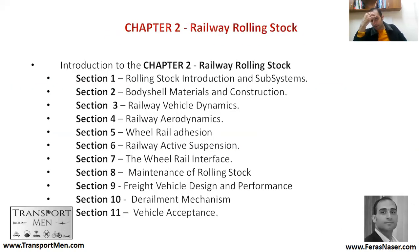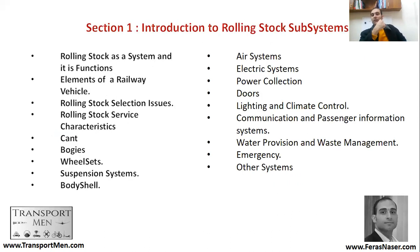Let us start with this chapter, Section 1: rolling stock introduction and subsystems. What are the rolling stock subsystems? There are many subsystems, and in this section we'll be discussing the rolling stock as a system and its functions. What are the functions that every railway rolling stock should achieve? Every vehicle should achieve: propel, brake, carry, and protect. We'll be looking at these in more detail.